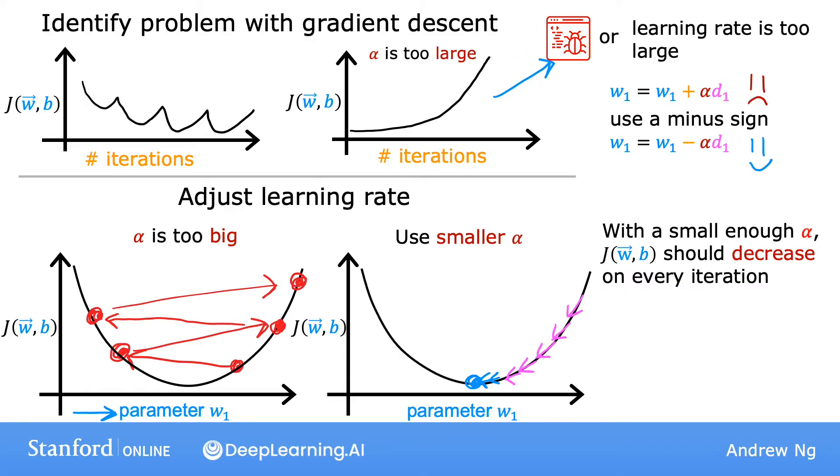Note that setting alpha to be really, really small is meant here as a debugging step. A very, very small value of alpha is not going to be the most efficient choice for actually training your learning algorithm. One important trade-off is that if your learning rate is too small, then gradient descent can take a lot of iterations to converge.